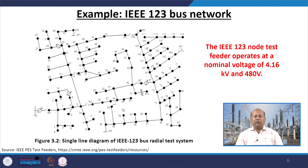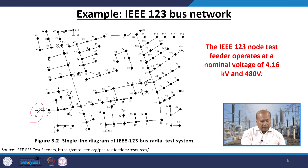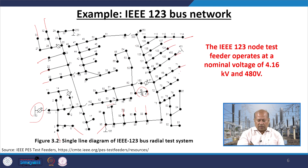The IEEE 123-node test feeder operates at a nominal voltage of 4.16 kV and 480 V. This is a single-line diagram of the IEEE 123-bus system, which is a radial feeder. It is most commonly used for experimenting with algorithms — the substation feeds radially throughout, and you can see some transformers, but the ends are all open, confirming its radial structure.